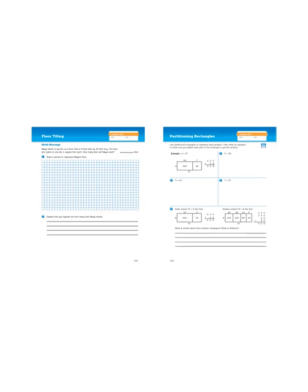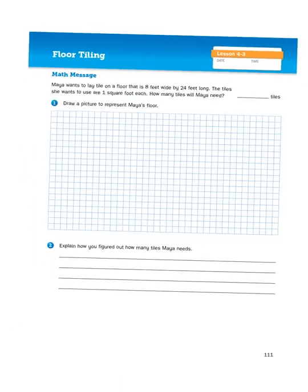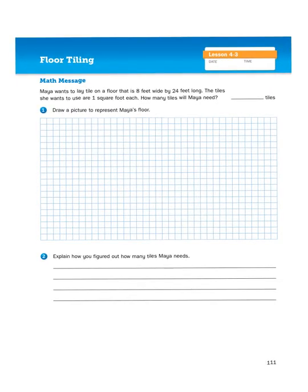That is dealing with area of a rectangle. So on page 111, we have this problem called floor tiling. It says, Maya wants to lay tile on a floor that is 8 feet wide by 24 feet long. The tiles she wants to use are 1 square foot each. How many tiles will Maya need?